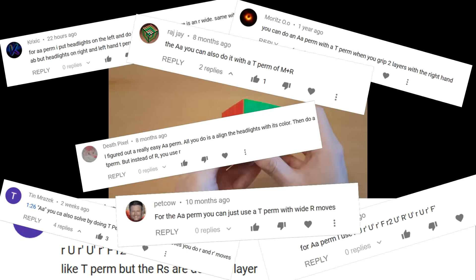I have a simpler AA perm. Like T perm, but the R's are double layered. This is game-changing. This is brand new information.